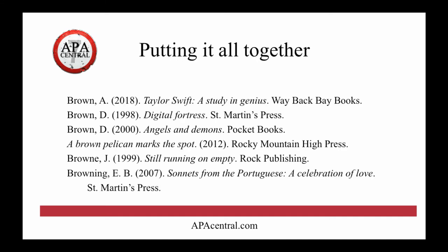If we put it all together, we can see that Amanda Brown's book comes first, then the two Dan Brown books by the year they were published, a brown pelican follows that, Browne with an E after that, and then Browning comes last in the reference list. Now I don't know what paper would ever have these sources, some of which are fictitious, but that's how you would do it if you wanted to put them all together.